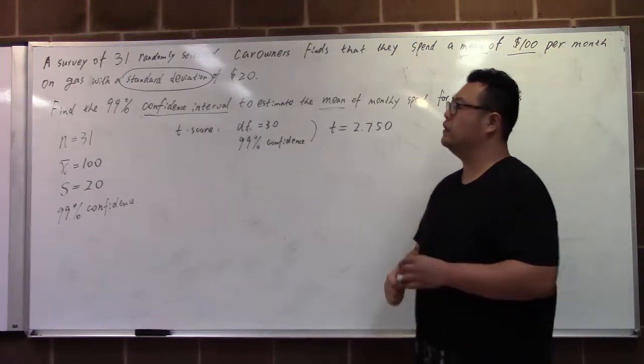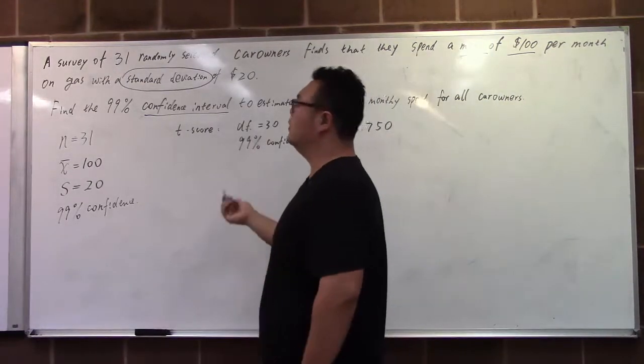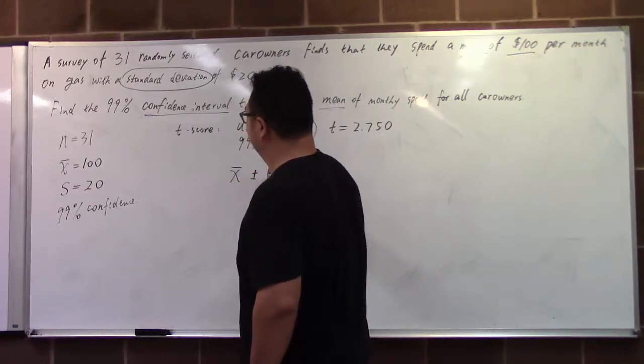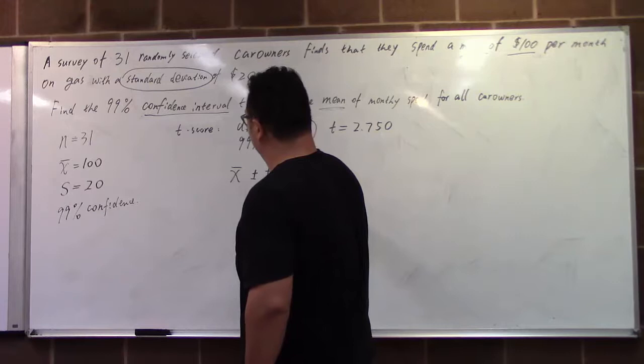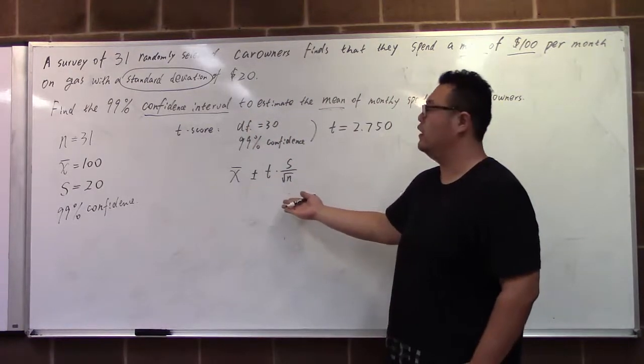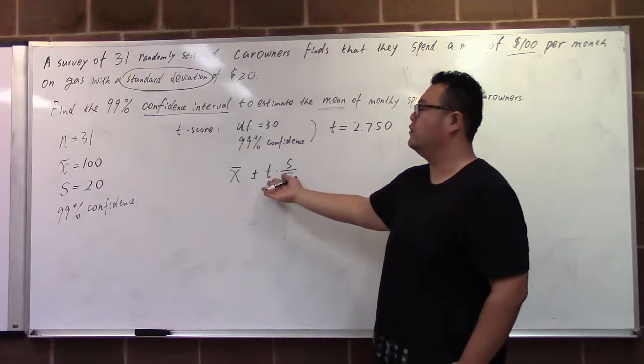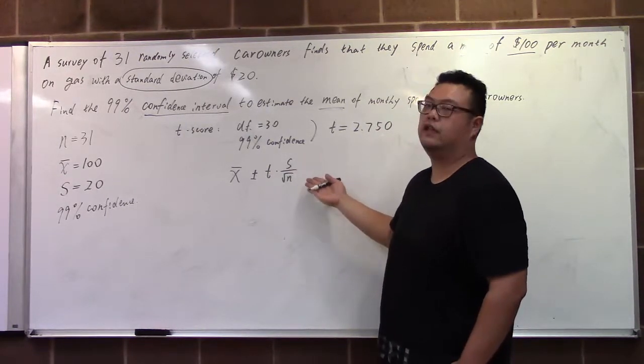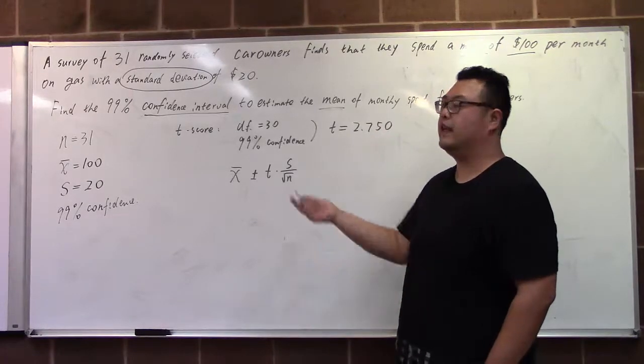Then afterwards, the confidence interval for the population mean follows: sample mean plus or minus the margin of error. In this case, using the t distribution, that's the t-score times the sample standard deviation divided by the square root of the sample size.